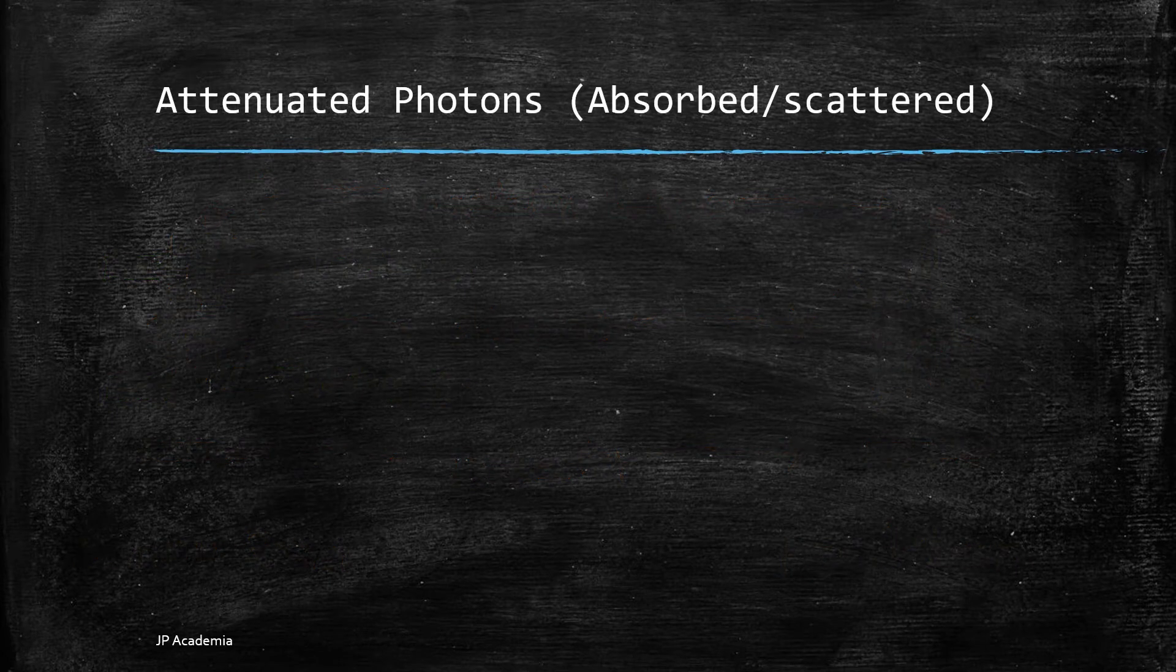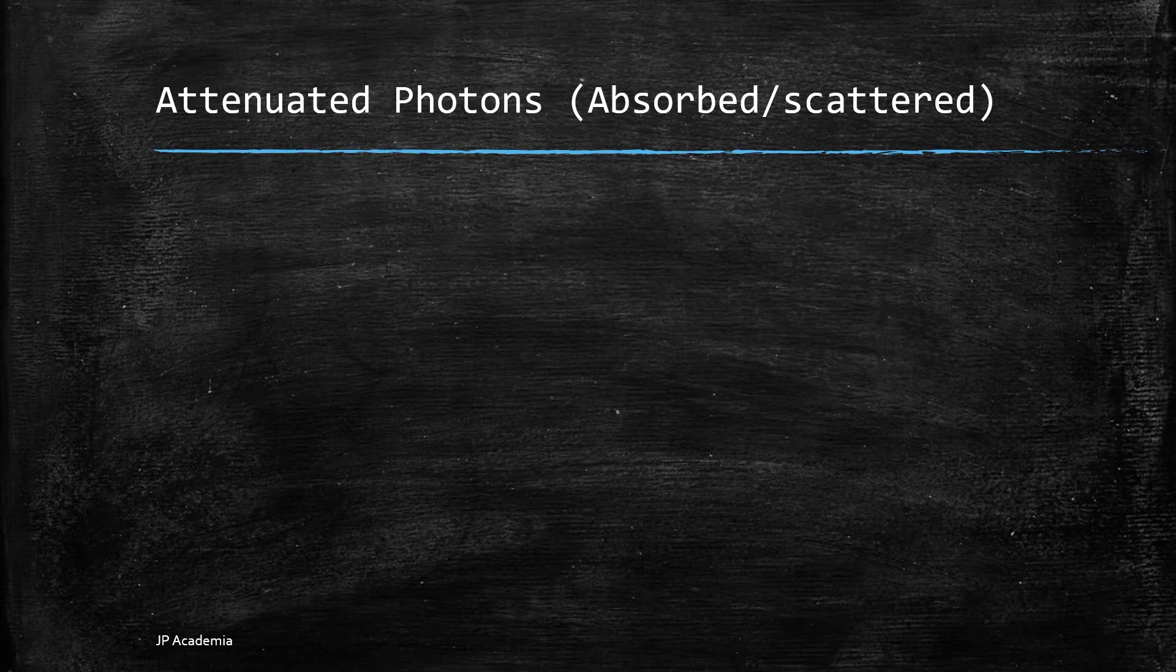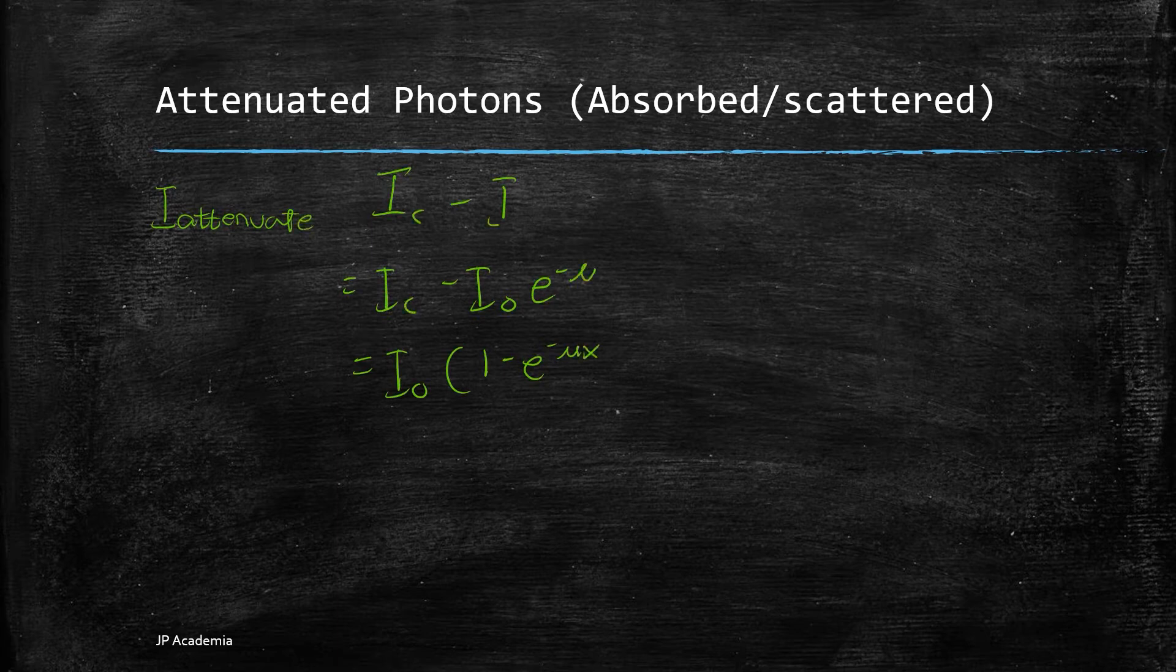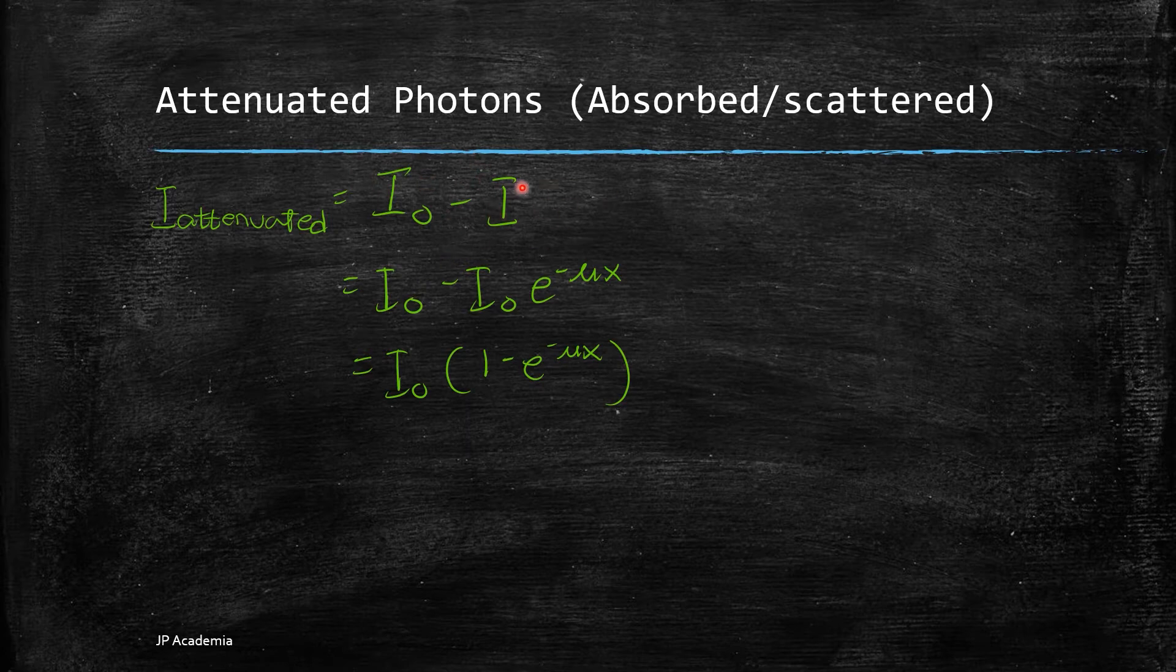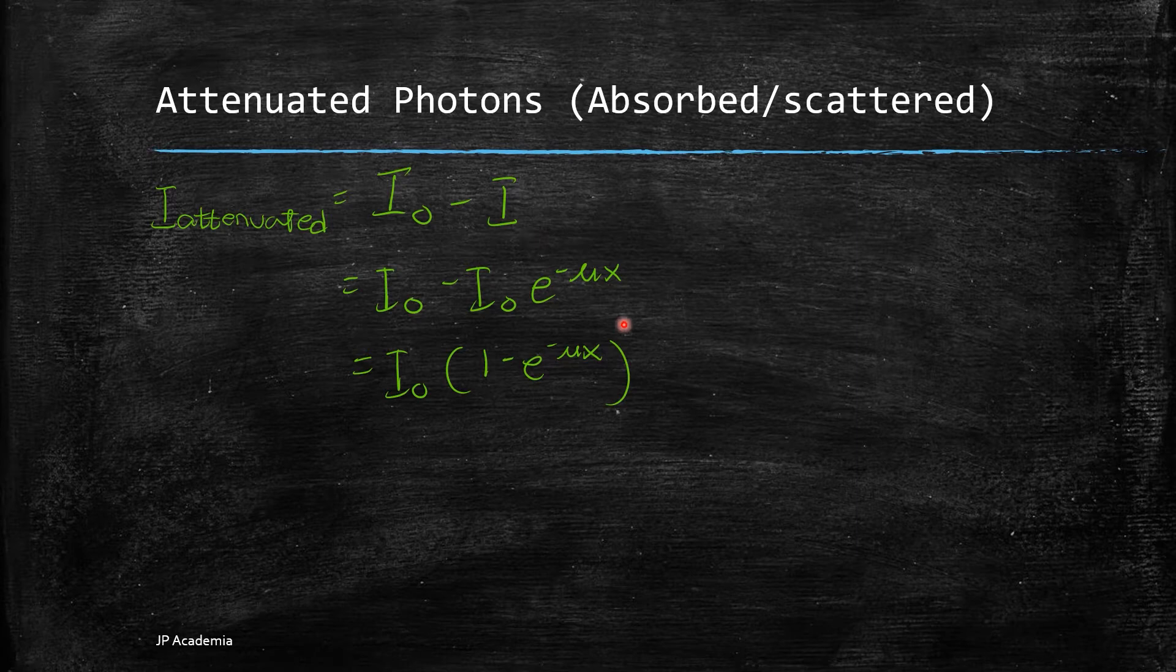Now, let's talk about the number of photons that is attenuated which refers to those photons absorbed or scattered. Using our expression earlier, we can define your I attenuated as the difference between I0 minus I, wherein I here is the number of photons penetrating a thin slab. Now, we can express this one into this.